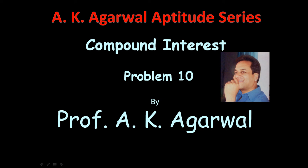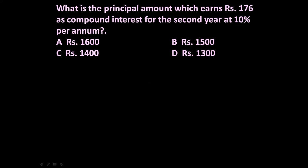Hello friends and welcome to AK Agarwal aptitude series. In this session, the given problem is: what is the principal amount which earns rupees 176 as compound interest for the second year at 10% per annum? During the second year it attracts an interest of rupees 176, so how much amount is invested? That we have to determine.